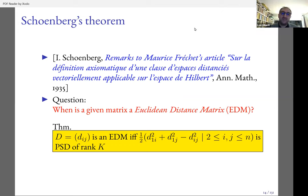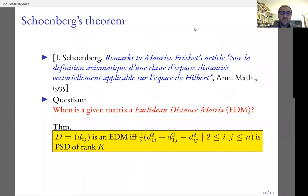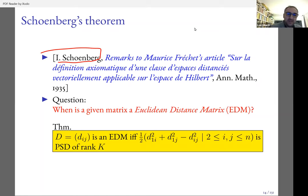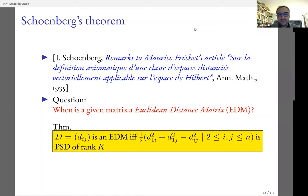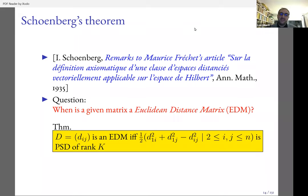Schoenberg wrote a very short paper in the Annals of Mathematics in 1935. By the way, Schoenberg is a famous geometer who invented splines. The paper has a very long title: 'Remarks to Maurice Fréchet's article sur la définition axiomatique d'une classe d'espaces distanciés vectoriellement applicable sur l'espace de Hilbert.' This short paper asks the question: when is a given matrix a Euclidean distance matrix?